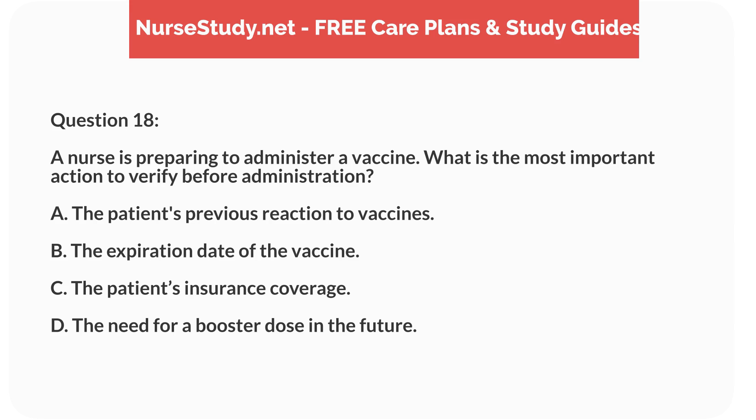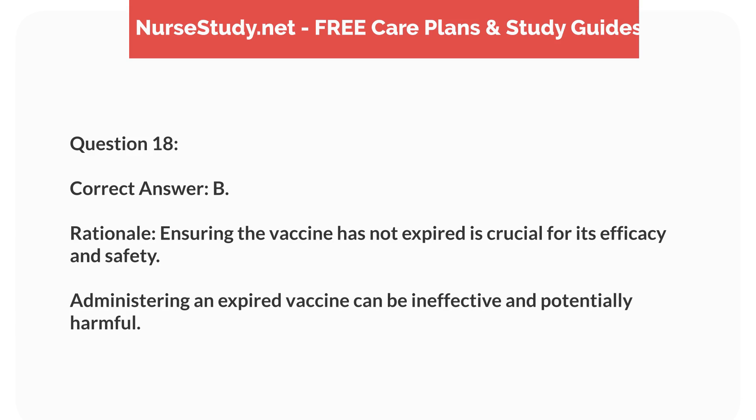Question 18. A nurse is preparing to administer a vaccine. What is the most important action to verify before administration? A. The patient's previous reaction to vaccines. B. The expiration date of the vaccine. C. The patient's insurance coverage. D. The need for a booster dose in the future. Correct answer: B. Rationale: ensuring the vaccine has not expired is crucial for its efficacy and safety. Administering an expired vaccine can be ineffective and potentially harmful.